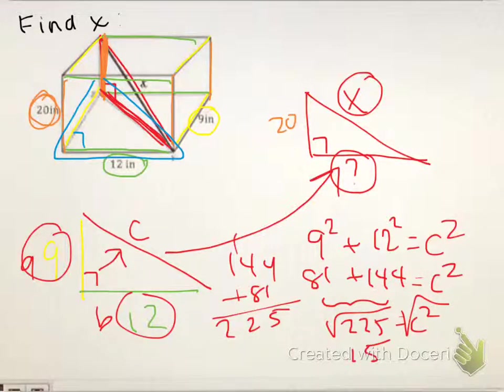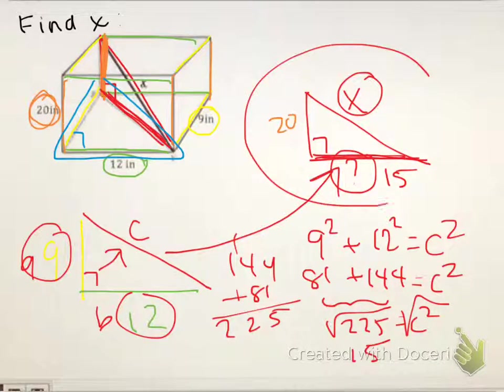So I know that this missing side on the bottom of my triangle that has X is 15. Now that's not X. We still have to do another problem. So let's take this triangle and look at that one.